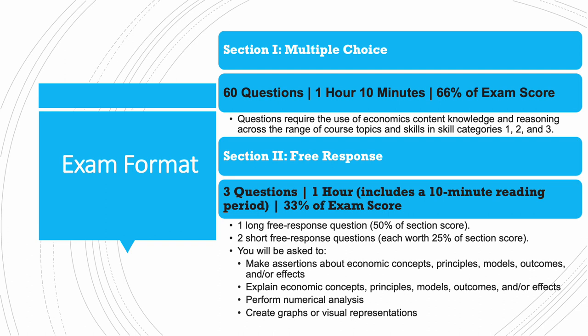The exam format has two sections. The multiple choice section has 60 questions — you have one hour and 10 minutes, which is about 70 minutes — and it's 66% of the exam score, or two-thirds. Questions require you to use economic content, knowledge, and reasoning across the range of course topics and skills in skill categories one, two, and three. The free response section has three questions — you have one hour, which includes 10 minutes of reading time — and it's 33% of your exam score, or one-third. It starts with one long free response question, which almost always includes graphing, and it's 50% of that section score. It is followed by two short free response questions, each worth 25% of the section score.